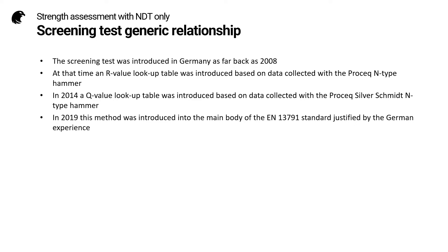The eagle-eyed among you may have noticed that in the two examples I used, I used two different lookup tables. This procedure was introduced in Germany as far back as 2008 in the National Annex, when an R-value lookup table was introduced based on data collected with the PROCEQ N-type hammer. In 2014, a Q-value lookup table was introduced based on data collected with the PROCEQ Silverschmidt N-type hammer. In 2019, this method was introduced into the main body of the EN 13791 standard, justified by the German experience.